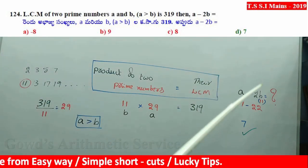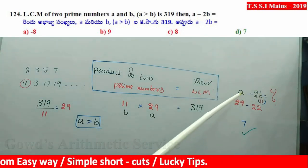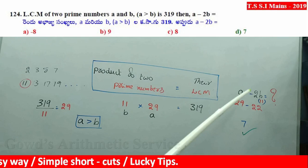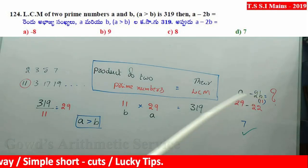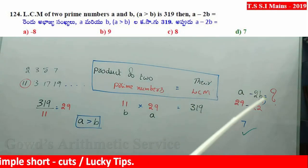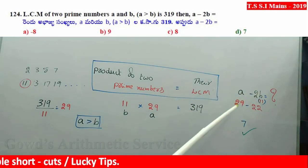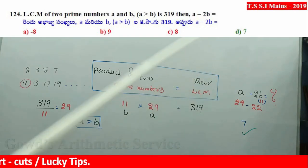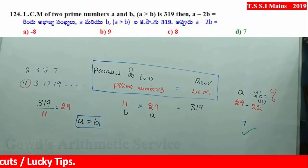Now compute A minus 2B. A equals 29, B equals 11. So 2 into 11 is 22. 29 minus 22 equals 7. That's the answer. Easy — work it out!